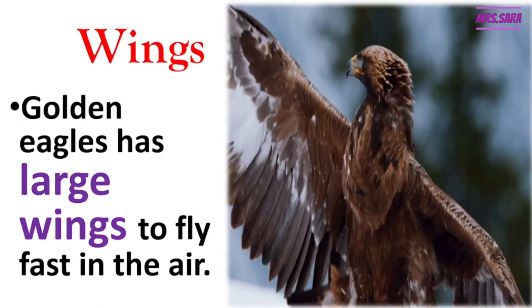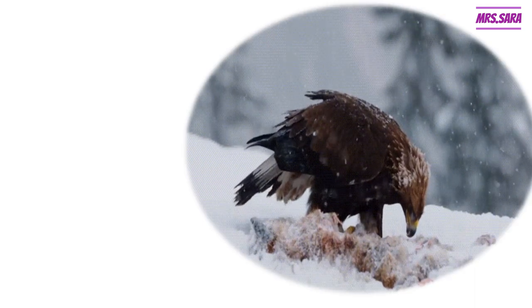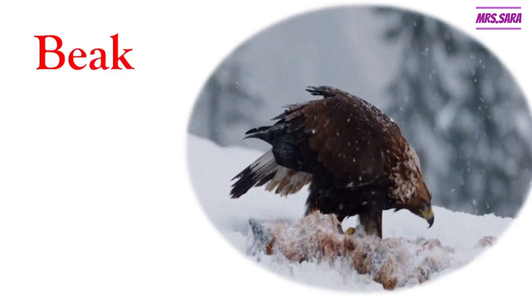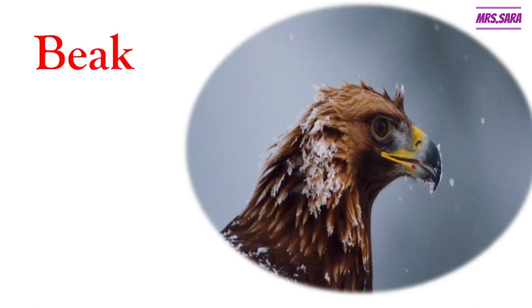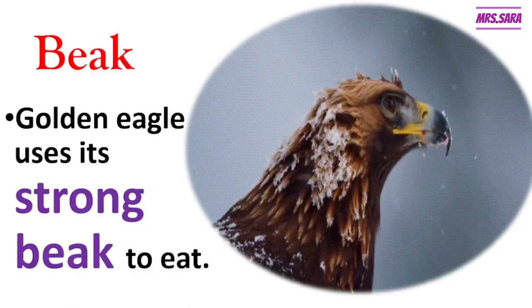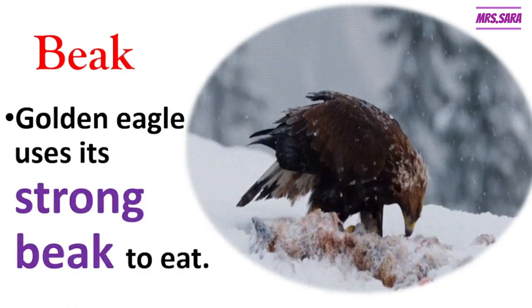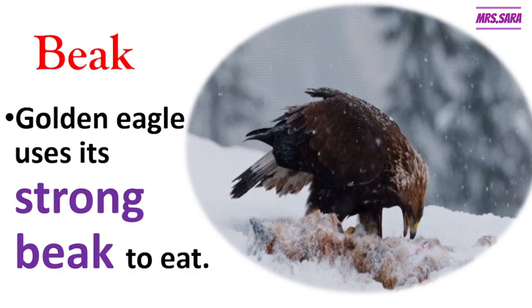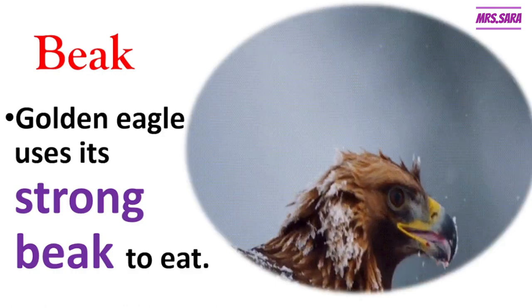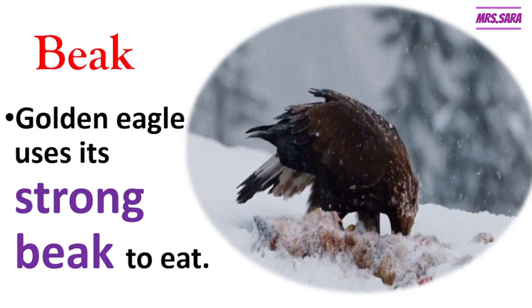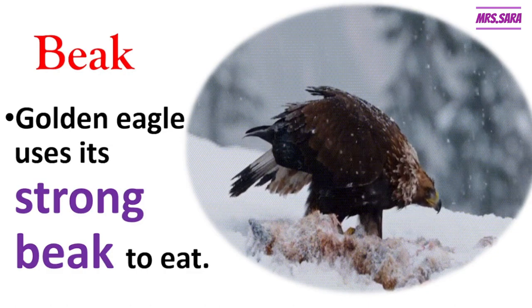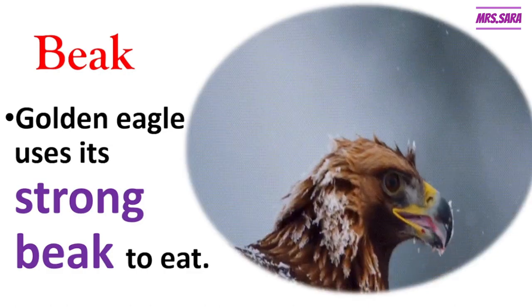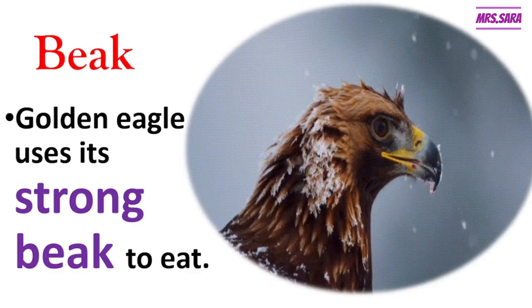Super! The golden eagle also has a beak. Like any bird, the golden eagle has a beak to eat. The golden eagle uses its strong beak to eat its prey. You will soon learn what the prey of the golden eagle is — the prey that it uses its strong beak to eat.